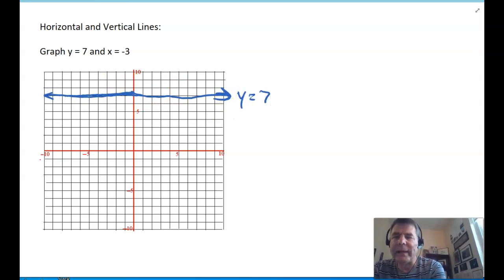What about x equals negative 3? So, now this says no matter what the value of y is, x is stuck at negative 3. So, if y is positive, x is negative 3. If y is negative, x is still negative 3. So, here is the graph of x equals negative 3.